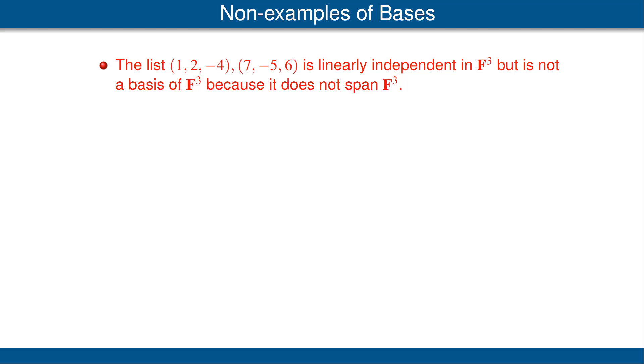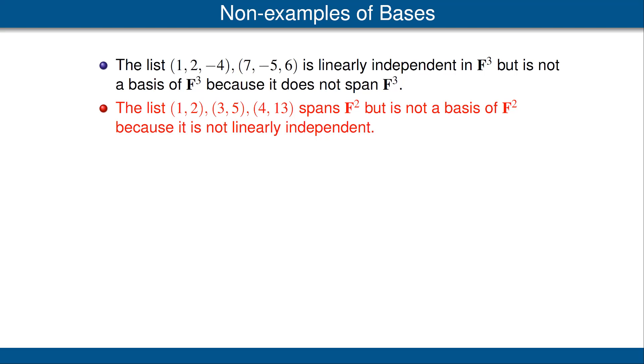Again, reminder: to be a basis, the list needs to be linearly independent and it needs to span the vector space in question. Our second example is this list of three vectors in F². This list does span F², but it is not a basis of F² because it is not linearly independent. I'll let you think about why.